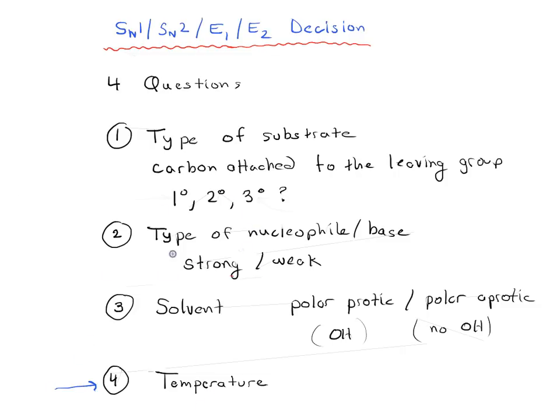We've already talked about the type of substrate, the type of nucleophile or base, and the solvent. If you weigh all of these considerations and you're still not sure what can happen - whether you're looking at SN1, E1 or SN2, E2 - here's the last thing you need to look at and that is the temperature.